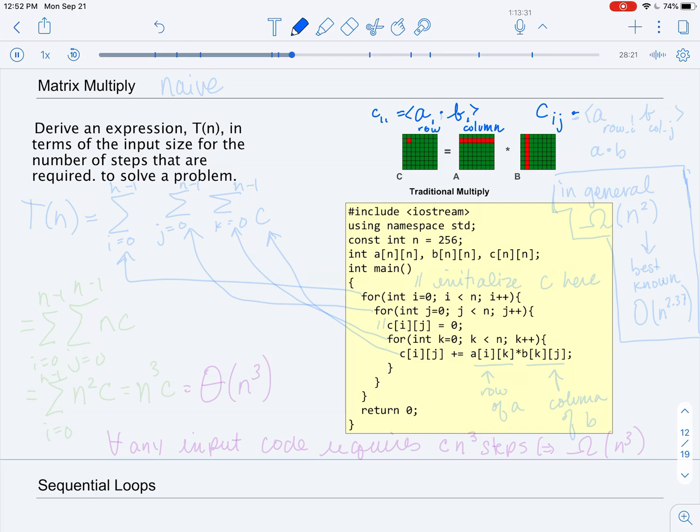You take the dot product of A row i vector and B column j vector, and what we're doing for that means basically we line up the A row vector and the B column vector, and we multiply each of the terms and just add them. So that's precisely what we're doing in these nested loops here.